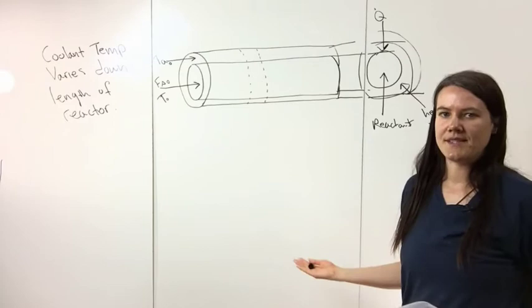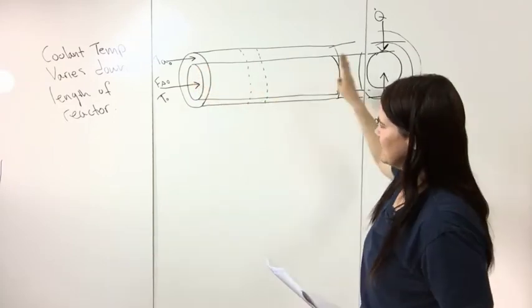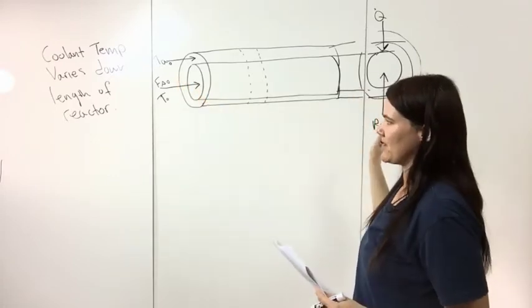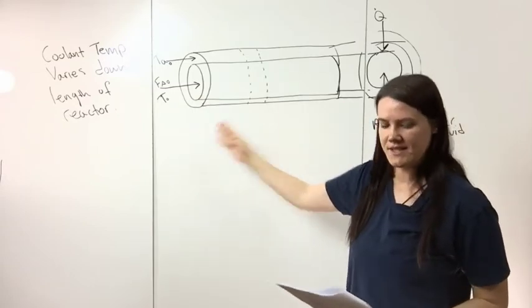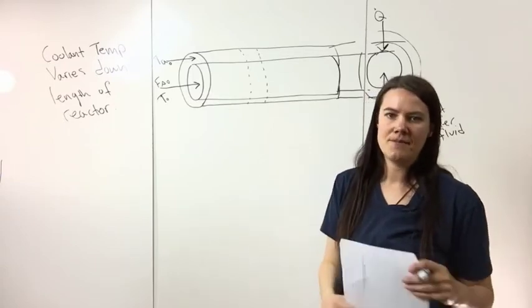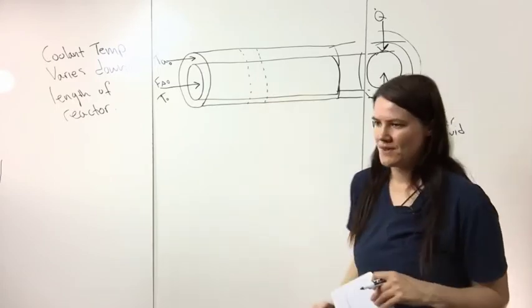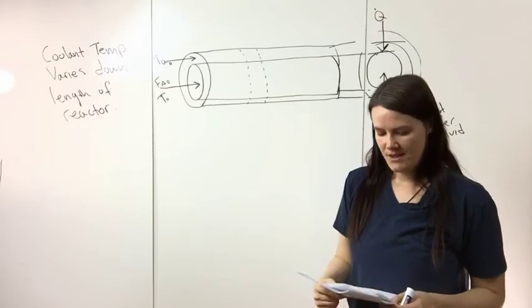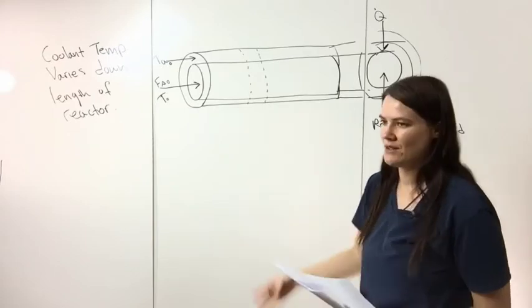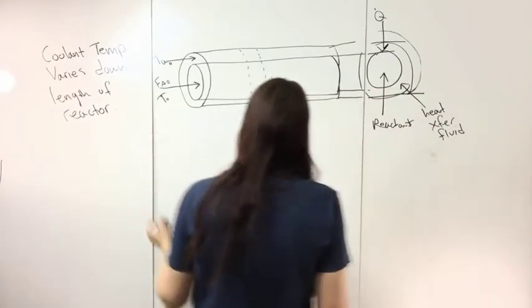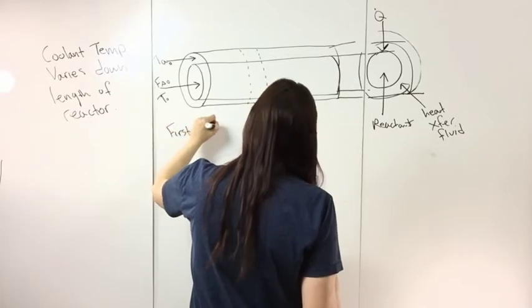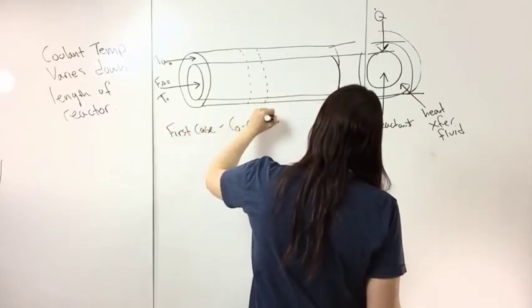There are two different ways this could occur. The fluid in the jacket can either flow in the same direction as the fluid in the reactor, or it can flow the opposite direction. When it flows in the same direction that's called co-current flow, and when it flows in the opposite direction that's called counter current flow. You can review this in detail in a heat transfer textbook. I'm going to look at both cases. The first case is co current flow.